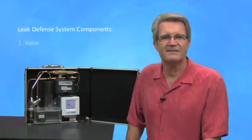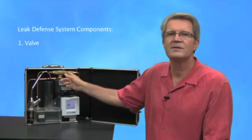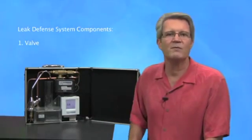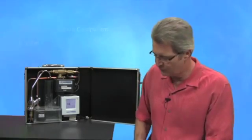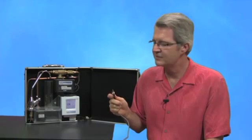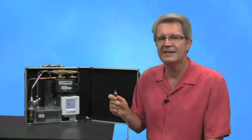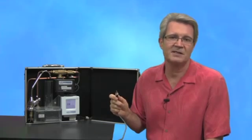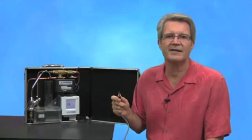The leak defense system has three primary components. First, it has a valve, like this one here, which all the water entering your home flows through. Near the valve are two thermodynamic sensors which monitor water flow. These small sensors are amazing in that they make our system, the leak defense, the only commercially available system in the world that measures water flow without any moving parts.